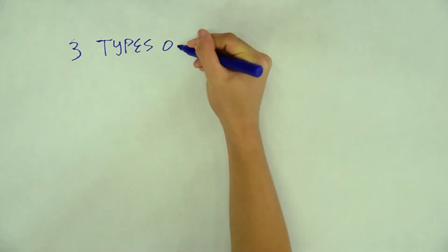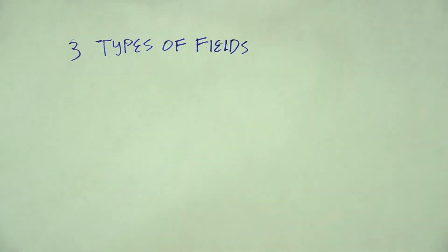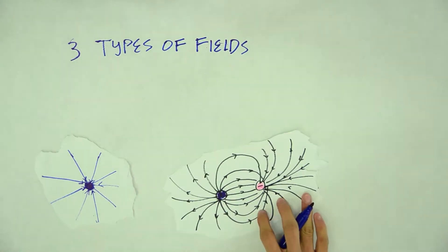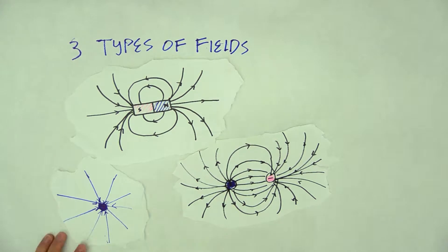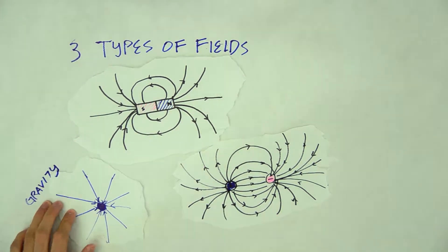There are three types of fields that we will be discussing today. The first one looks like a bunch of vectors being attracted to a single entity. Next, we have a proton and an electron with field lines surrounding them. And lastly, we have a bar magnet with its north and south poles producing field lines as well.